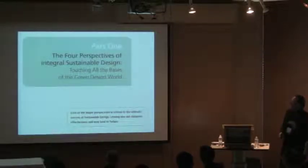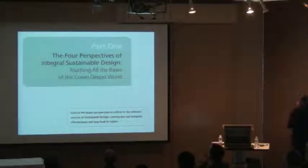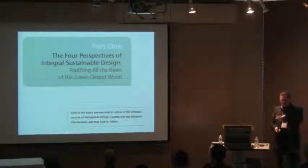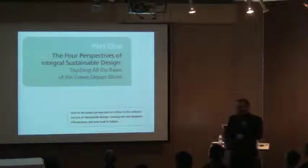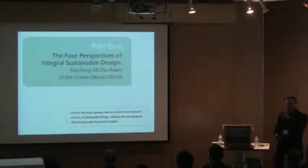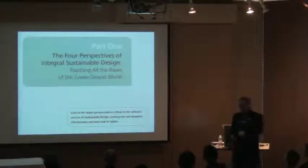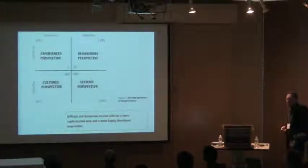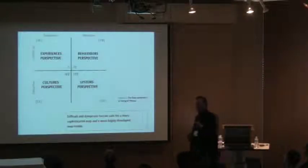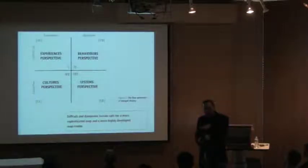I want to start with what I call the four perspectives of integral sustainable design. The talk today will be in three parts: we'll talk about this first, then we'll talk about what I call levels of complexity, and then we'll get into some specifics about ecological design thinking. That's really the theme today — throughout, we're only going to be looking at a portion of the general content, but focusing on the intersection of design and ecology.